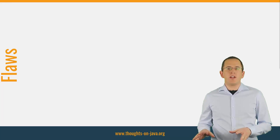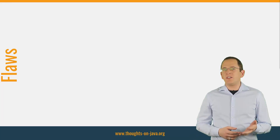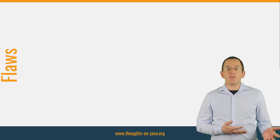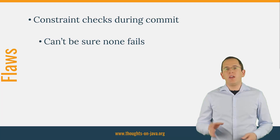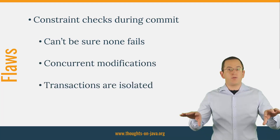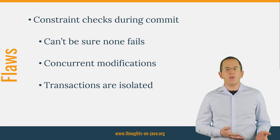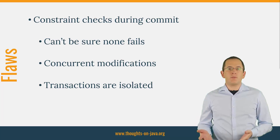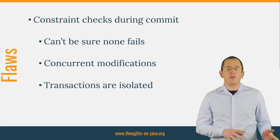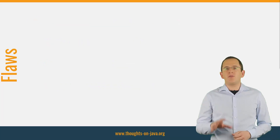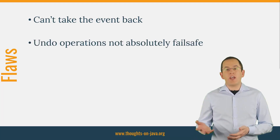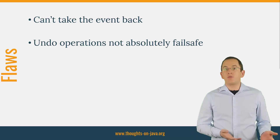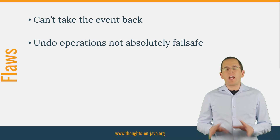But what do you do if your database transaction fails? Your operations might violate a unique constraint, or there might be two concurrent updates on the same database record. All database constraints get checked during the commit and you can't be sure none of them will fail. Your database transactions are also isolated from each other, which creates scalability issues. In short, your database transaction might fail and there's nothing you can do about it. If that happens, your event is already published, other microservices have likely already triggered business logic, and you can't take the event back.